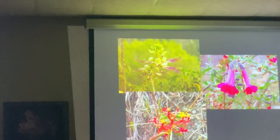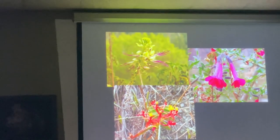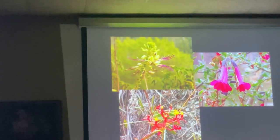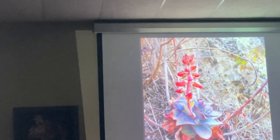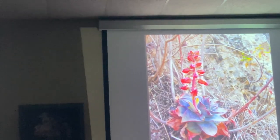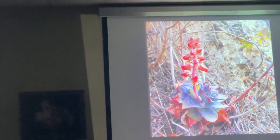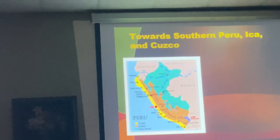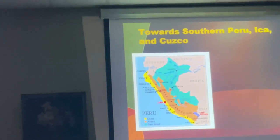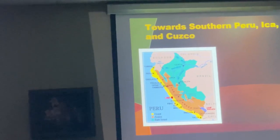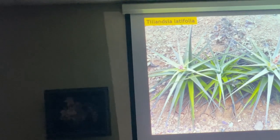It sort of looks like Tillandsia tovarensis, but it's quite far from tovarensis geographically. Some more vegetation from this area and some more Echeveria — all these Echeverias have been described by Guillermo Pinot. South of Lima, we go towards Ica and Cusco afterwards.